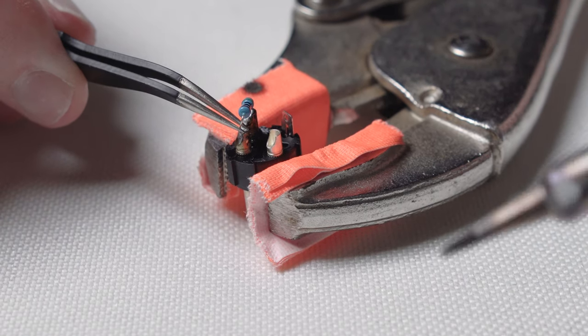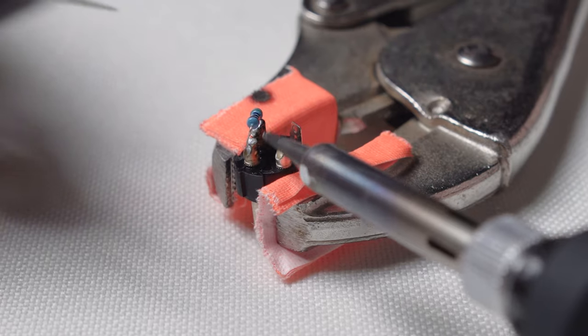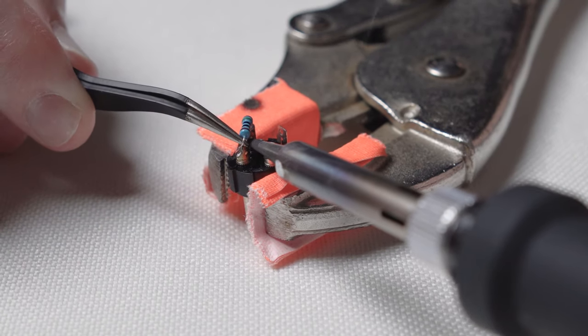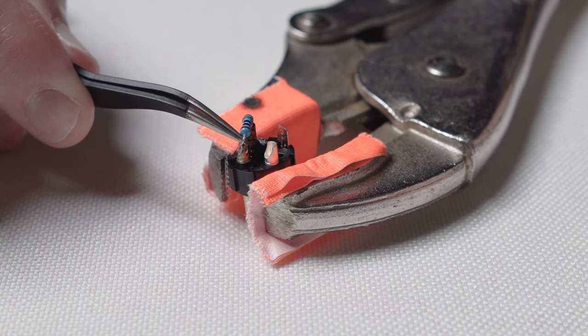And in case you're curious, you can't put the resistor in backwards. The current will flow both directions through the resistor, so you don't have to worry about which side goes in which pin.